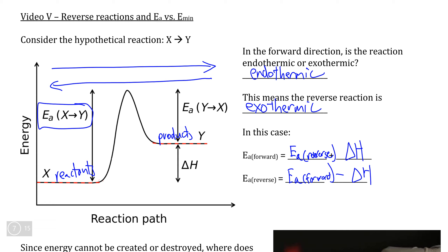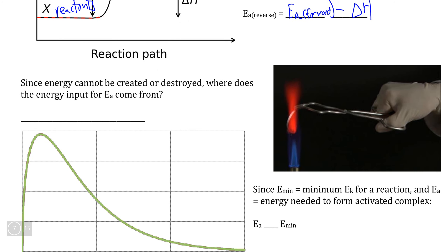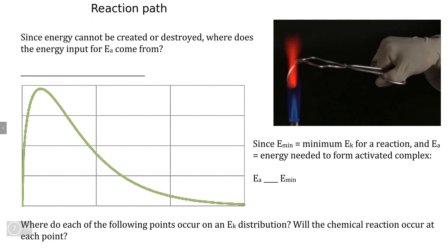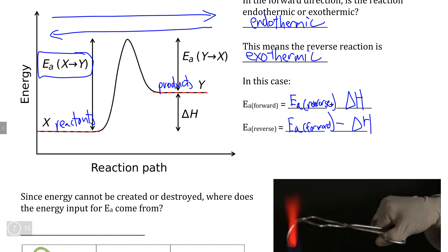That's the connection between the forward and reverse directions of activation energy and delta H. Now it's time to put everything together and compare all of that to kinetic energy. As we know from the law of conservation of energy, we cannot create or destroy energy, which means that this increase in potential energy cannot just magically be made out of nowhere.